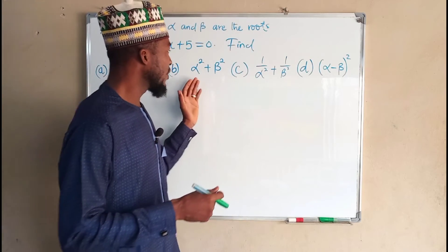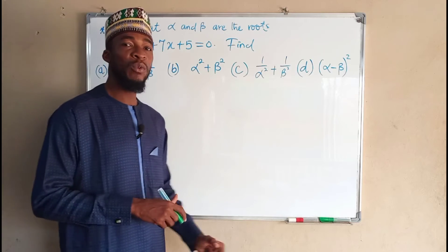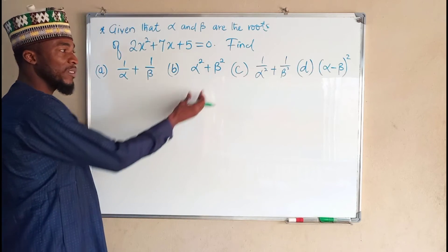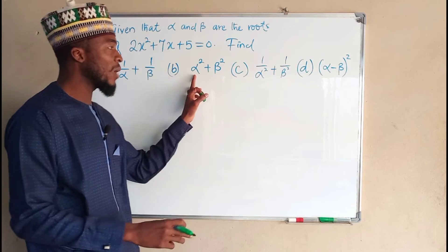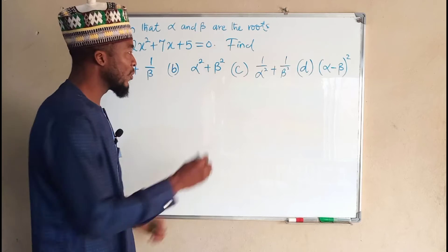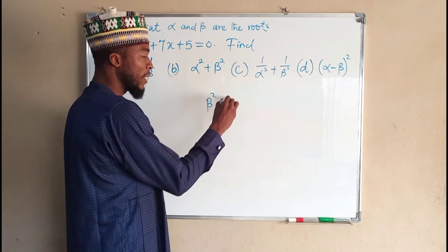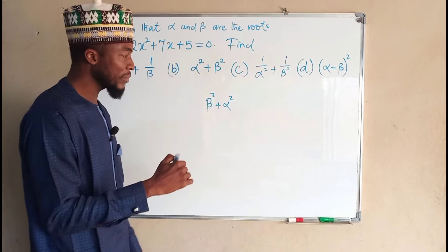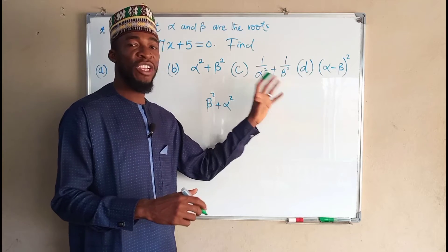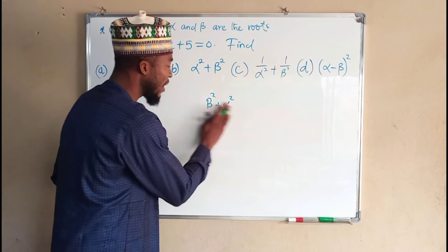The symmetrical functions are these, and there are many more symmetrical functions. Why do we call them symmetrical functions? They are symmetrical functions in the sense that, for instance, if we have alpha squared plus beta squared, interchanging them will not change the value — beta squared plus alpha squared remains the same. So interchanging all these values will not change their main value.